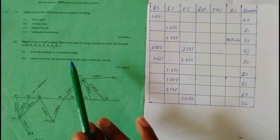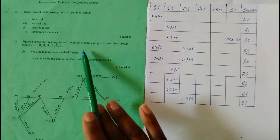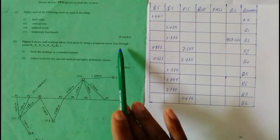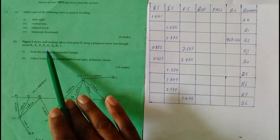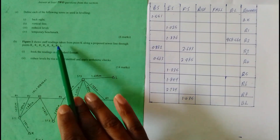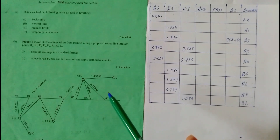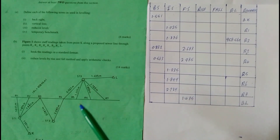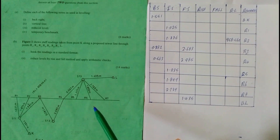The problem states that the staff shows readings taken from point K along a proposed sewer line through points R1, R2, R3, R4, R5, R6, R7, and R. Book the readings in standard format, then reduce levels by the rise and fall method and apply arithmetic checks.